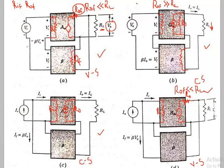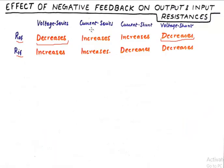Is RL going down or is RL going up? If RL is going up, that means ROF is decreasing. If RL is going down, that means ROF is increasing. RL goes down because the total output resistance increases as a result of series resistance being placed in the circuit. So in the case of current sampling, the output resistance increases.